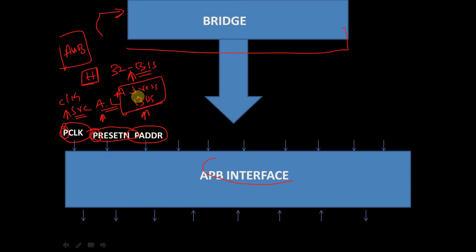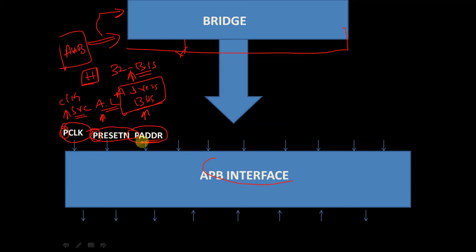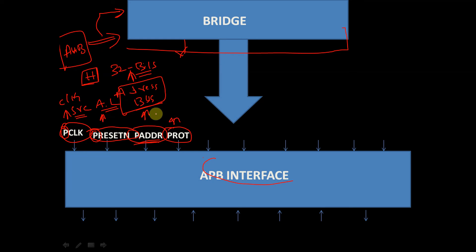With the help of the PADDR address bus, the AHB interface sends the address of the slave it wants to communicate with — to send or receive data. The address information of the slave is given to the bridge, and from the bridge it is fed into the APB interface. Next, PPROT is a protection type signal that indicates the normal, privileged, or secure protection level of the transaction, and whether the transaction is a data access or instruction fetch.